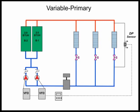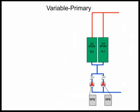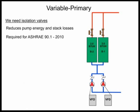There are only constant flow, constant speed pumps here. So we're going to pipe up this variable primary system. Do you see anything missing? One thing that's missing is isolation valves. These are a must. Isolation valves help reduce pump energy and stack losses, and they're also required for ASHRAE 90.1 2010.